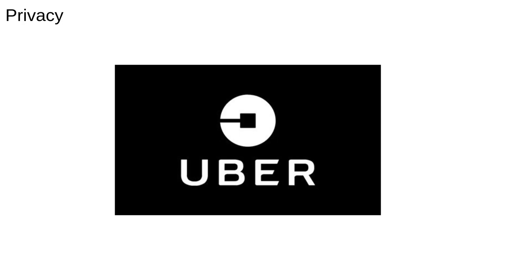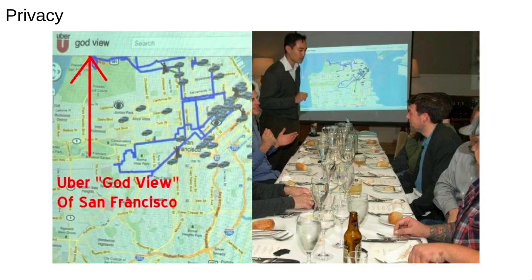There are dozens of other serious scandals that you can find with a quick search. For example, Uber was using its customer data to construct their 'God's view' technology. This showed them when and where people travelled, and they were using it to track a reporter investigating them, as well as celebrities, politicians, and others. Here's a picture of what it looked like. This was in 2011, and since then, concerns about privacy have become louder, so that things this blatant are hopefully not as common.